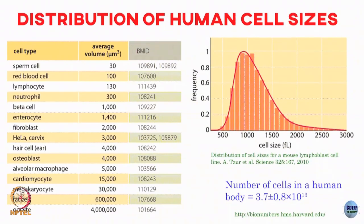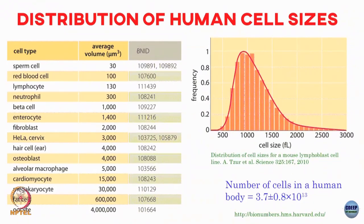Before ending, here is a very nice curve showing the distribution of human cell sizes - again illustrating variability. These are different cell types: sperm, red blood cell, lymphocyte, neutrophil, and so on, spanning a whole range of volumes. The sperm cell is one of the smallest at 30 micron³. The fat cell or oocyte lies at the other end of the spectrum, an extremely huge cell. You can plot a histogram of cell sizes - this one is for mouse fiber and mouse lymphoblast. The total number of cells in a human body is around 37 trillion. So we have talked about crowding and about fluctuations or noise.